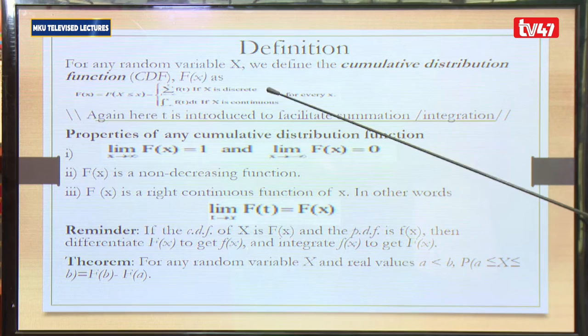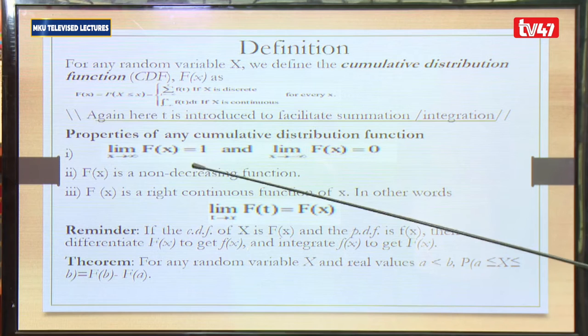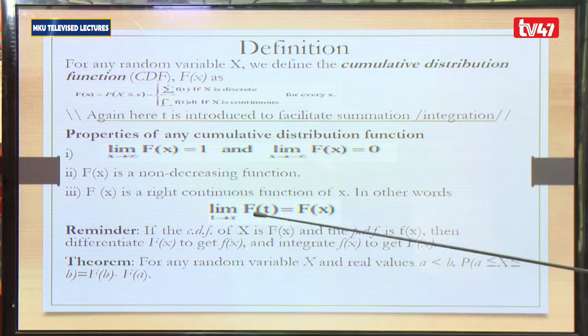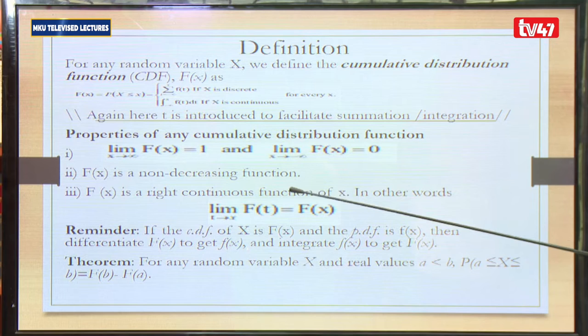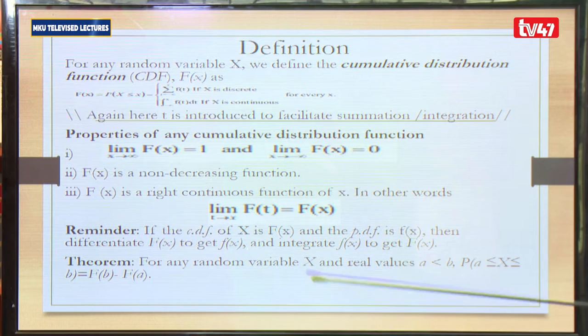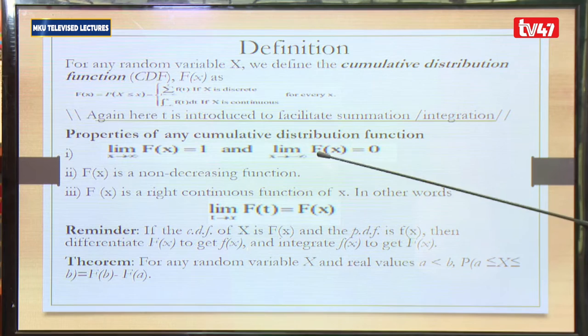T is introduced to facilitate the summation or the integration — summation for the discrete case, integration for the continuous case. Some properties of the CDF to note: the limit as X tends to a very large value of the CDF is 1, and the limit as X tends to the smallest value is 0. So the CDF lies in the interval [0, 1] and is an increasing function of X.